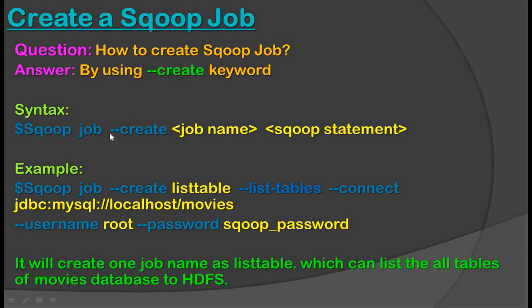The syntax for creating a Sqoop job is: sqoop job --create [job-name] [sqoop-statement]. You write the Sqoop statement once, give the job a name, and it will create a Sqoop job with that statement. You can then execute and run this Sqoop job whenever needed.